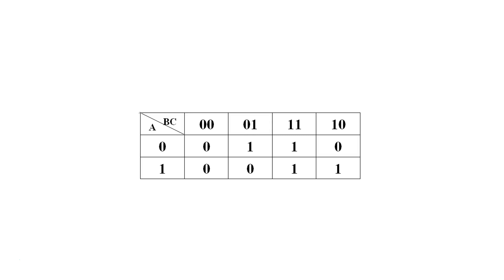Let's start with a three-variable Karnaugh map. We have three variables — A, B, C — so we have an eight-cell Karnaugh map. Let's try to find the largest group of zeros here.